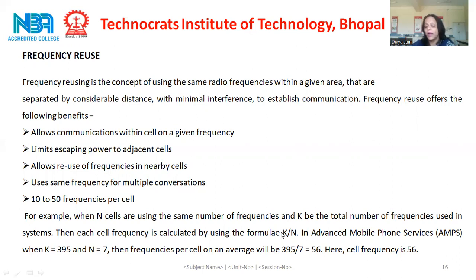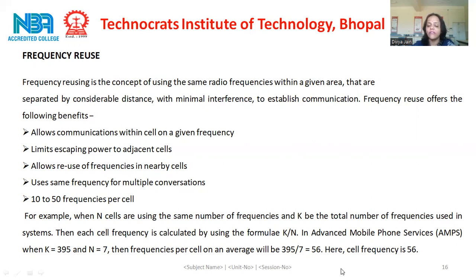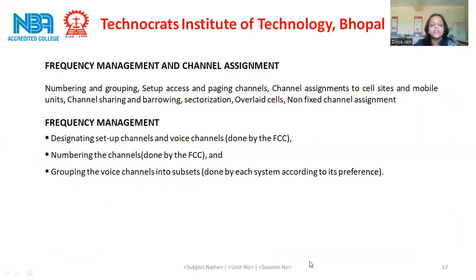By using the frequency reuse concept, the same frequency can be used by multiple users within a certain distance. For example, when N cells are using the same number of frequencies and K is the total number of frequencies used in a system, then frequencies per cell are calculated by the formula K divided by N. In AMPS, when K is 395 and N is 7, then frequencies per cell on average will be 395 divided by 7, that is 56. Each cell has 56 different frequencies.